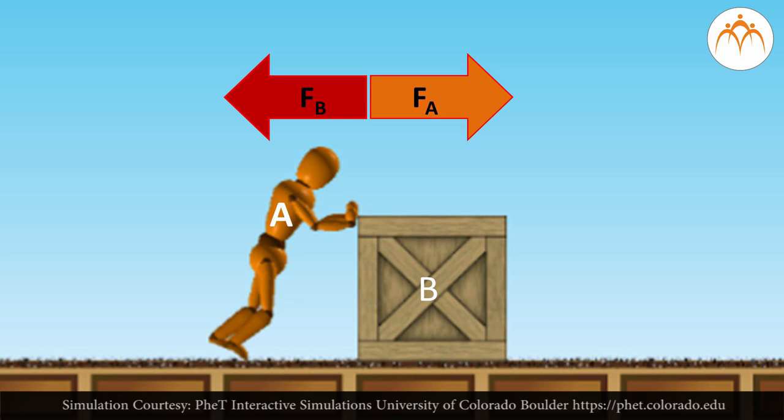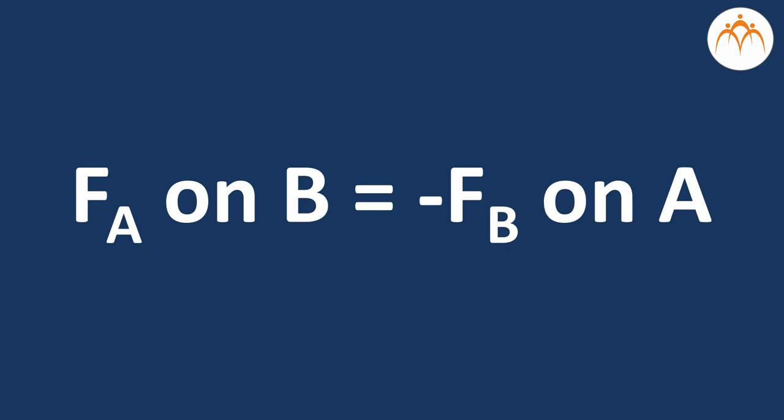We can use plus and minus signs to indicate the direction of forces and Newton's third law can be written as F A on B is equal to minus F B on A. Newton's third law always involves two objects and refers to pairs of opposite forces of same type.